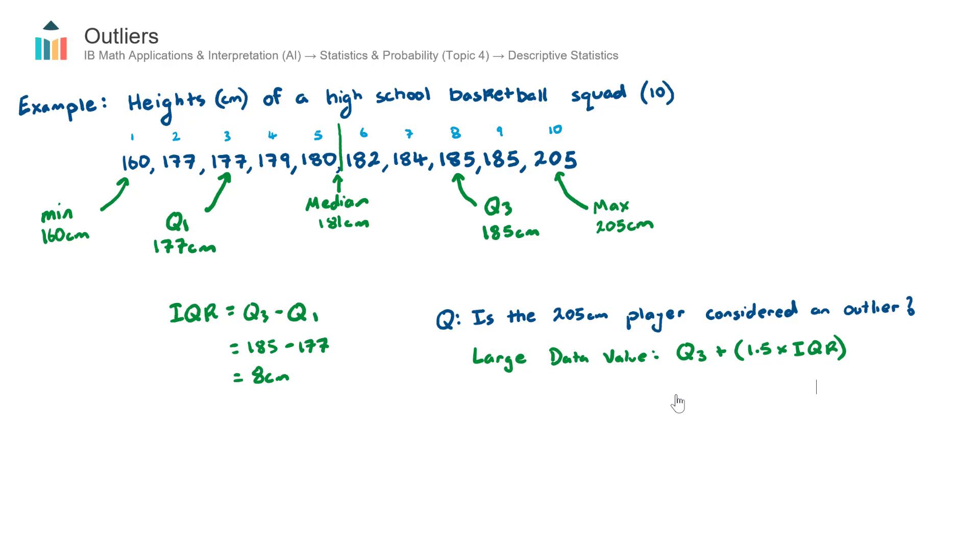My upper quartile Q3 was 185 plus 1.5 multiplied by my interquartile range. So this is 8.